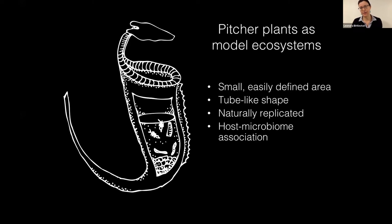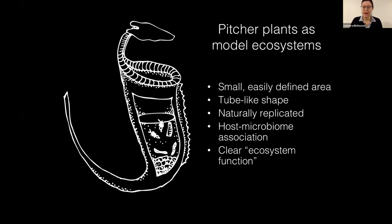The pitcher plant has a host-microbiome association; in many ways the pitcher community is like a gut, helping its host to break down and access nutrients from its prey. This plant analog of an animal's gut also has clear ecosystem functions. The breakdown and decomposition of insect prey allows nutrients to enter the aquatic pool and for the host plant to absorb them. These plants grow in really low-nutrient ecosystems and get a lot of their nitrogen and phosphorus from the insects they eat.